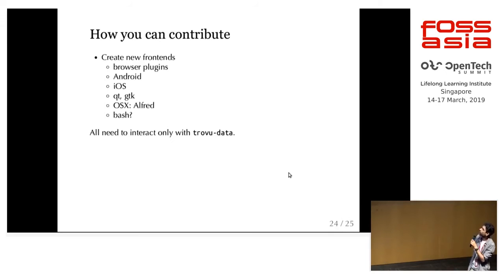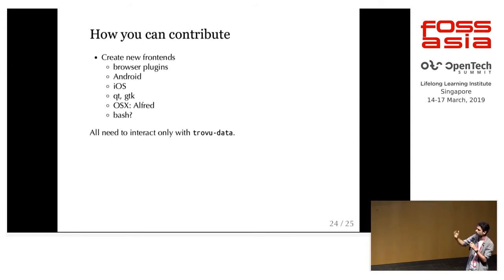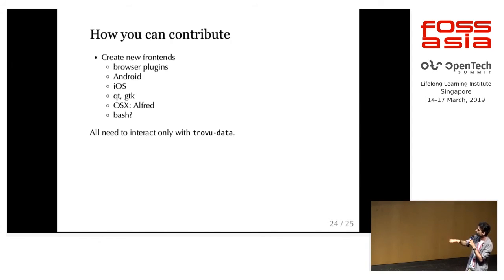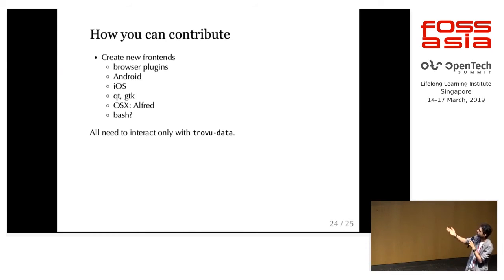You can also create entirely new front-ends. You only need to interact with Trovo data — it's all YAML files on Git, so you can pull it regularly. We can set up a repo for you so you're always up to date. Then you're fully free to use your favorite programming environment: iOS, Android, browser plugins, and so on.